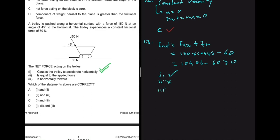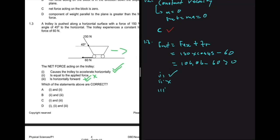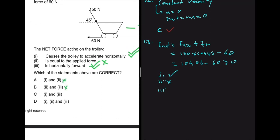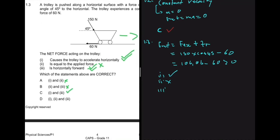Option II is not true. Option III says the net force acting on the trolley is horizontally forward, which is true because the result is positive, meaning we're moving in the right direction. So options I and III are correct, which is option C. Our answer for 1.3 is option C.